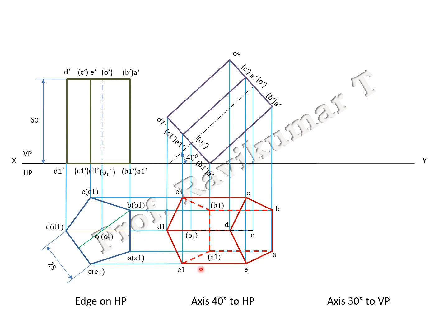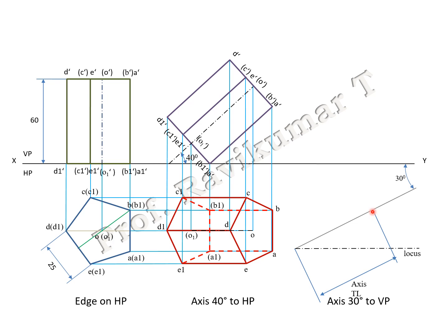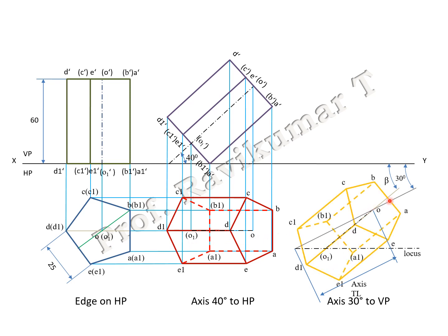Next, find the true length. We take the length from O to O — O to O is the apparent length from the second position, and O to O from the first position is the true length. To find the beta angle — the inclination with VP — take the true length and draw a locus line from the same point. Take the apparent length and cut an arc on the locus line. Join the line and extend to the XY line. You will get the beta angle, which you find only in locus problems. Take O to O1 and place it for the inclination with VP.